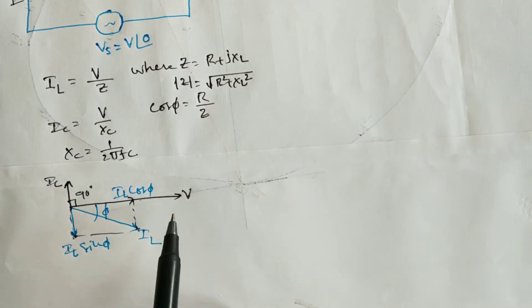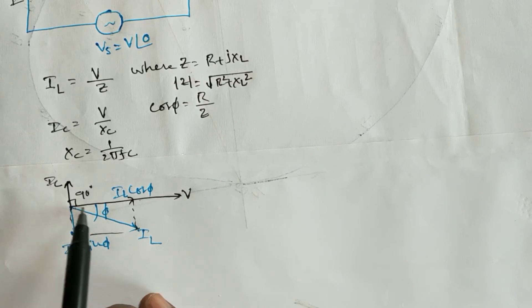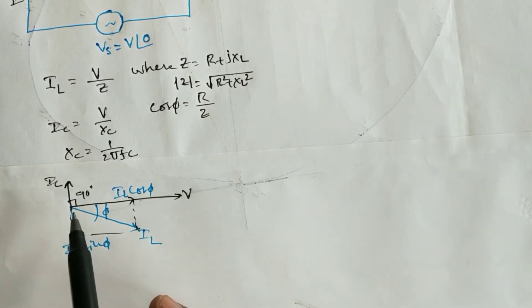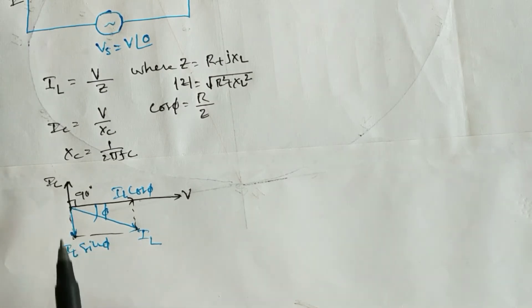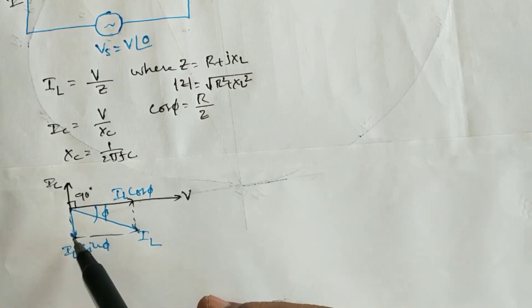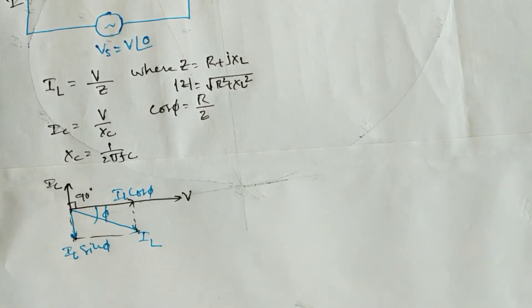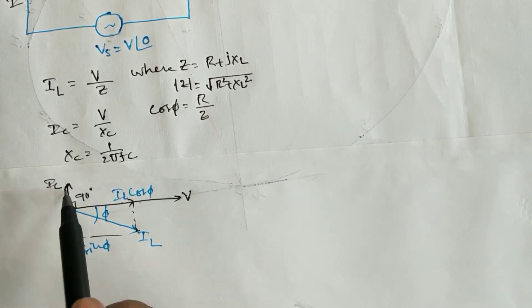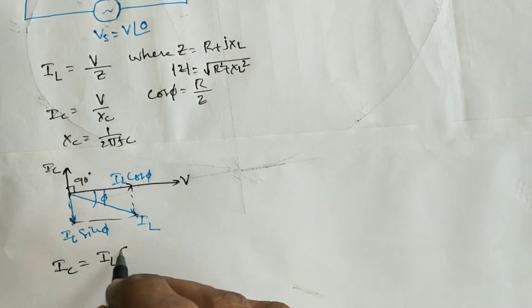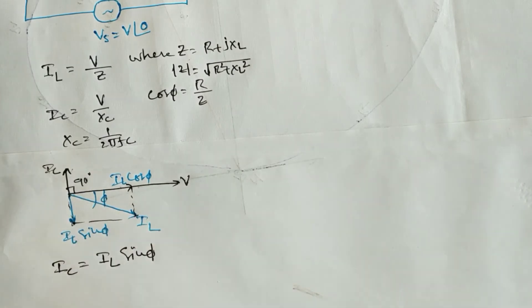Observing the phasor diagram carefully, the component of current in phase with the supply voltage is I_L·cos(phi). There are two reactive components — I_C and I_L·sin(phi) — acting in opposite directions. If the magnitudes of these two currents are equal, the net reactive component becomes zero and the total current has only the active component I_L·cos(phi). Hence the condition for parallel resonance is I_C = I_L·sin(phi), so that these two cancel each other.